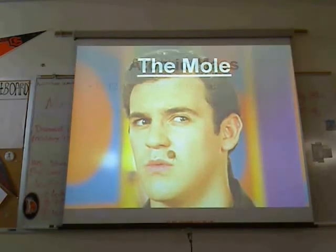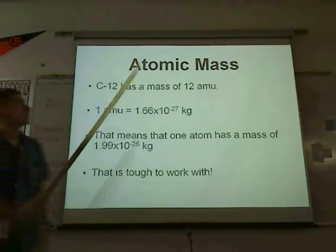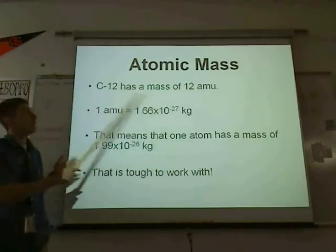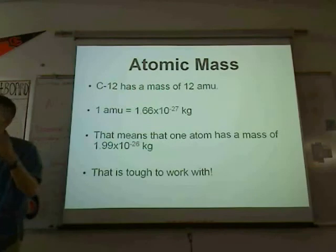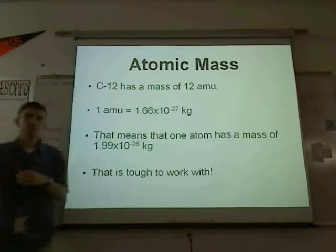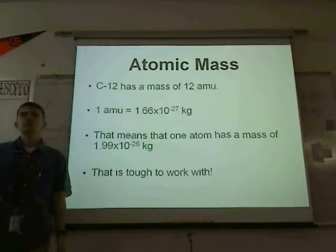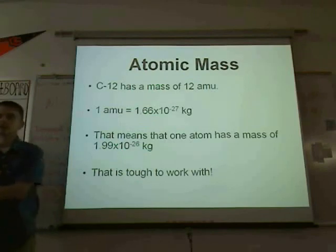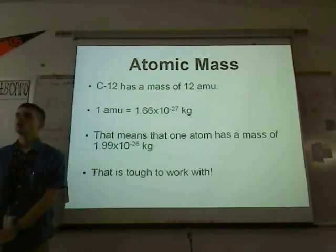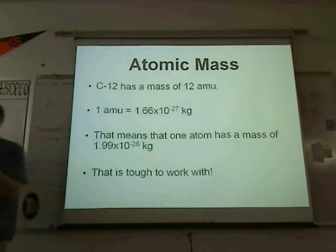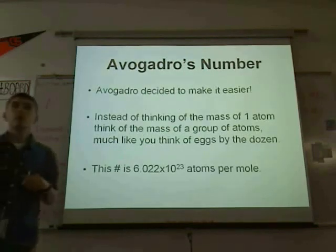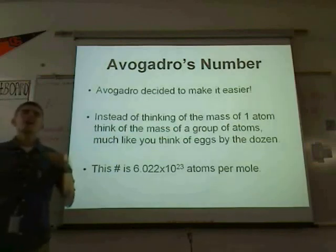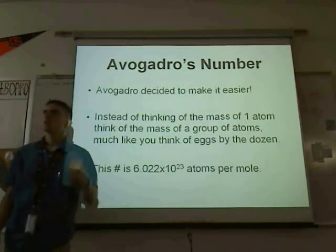The mole. If you look at the periodic table, carbon-12 has a mass of 12, meaning one atom has a mass of 12 AMU — atomic mass units. An AMU is 1.66 times 10 to the negative 27 kilograms, which means carbon with 12 AMUs has a mass of 1.99 times 10 to the negative 26 kilograms. Those are hard numbers to work with — confusing and no fun. So our favorite guacamole-loving scientist, Avogadro, came up with a way to help us out: instead of thinking about things in terms of one atom, we use the mole.